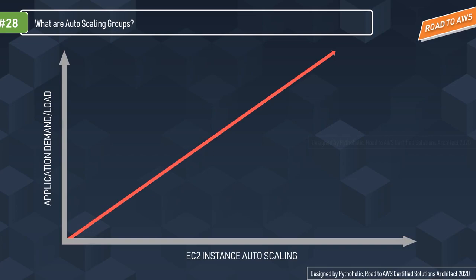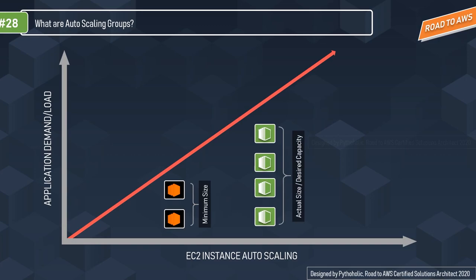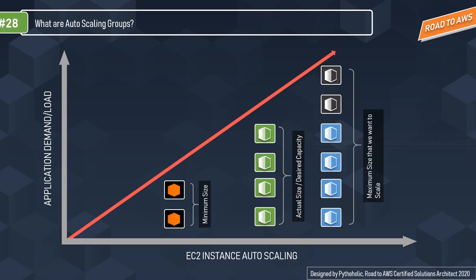Looking at a simple graph — the y-axis shows application load or demand, the x-axis shows EC2 instance auto scaling. As the load increases we have a minimum size of two instances as the lower limit, below which auto scaling should not scale the instances down. As load increases further to the regular level, the desired capacity is four instances. When the load increases even more, we have a maximum cap of six — two additional instances in reserve. The blue instances are the desired capacity and the gray ones are what the auto scaling group will add if needed. The reverse happens if load decreases.